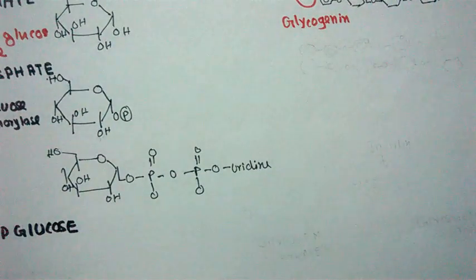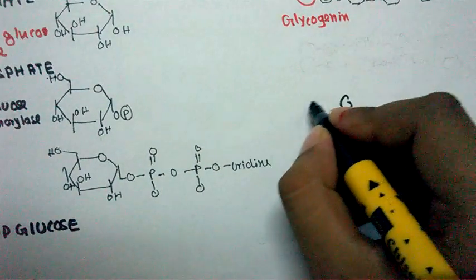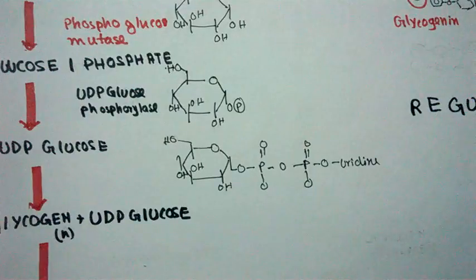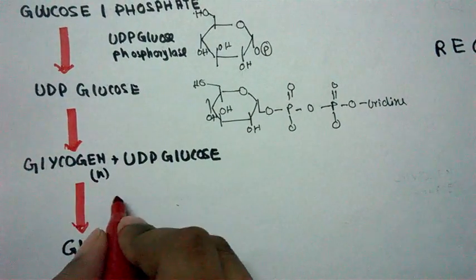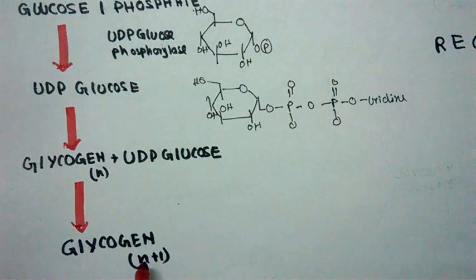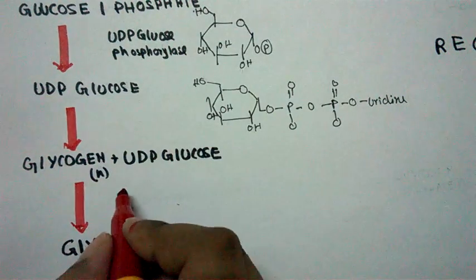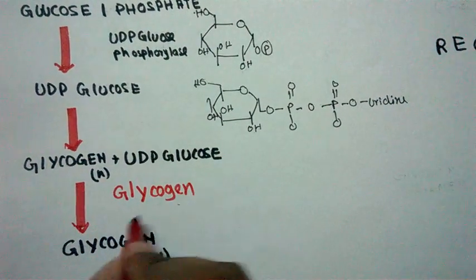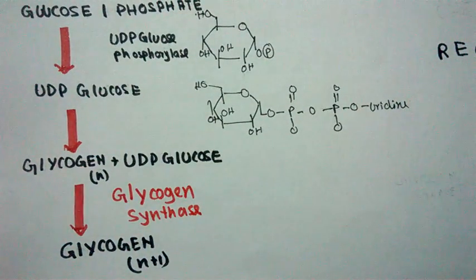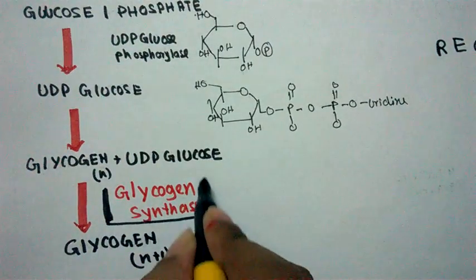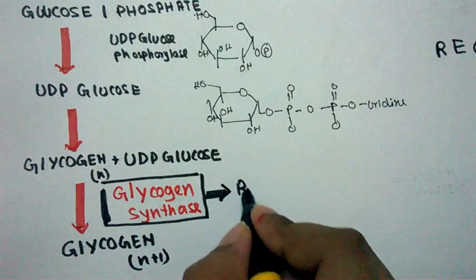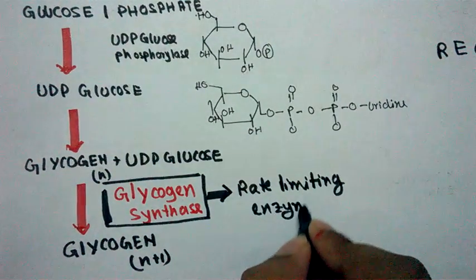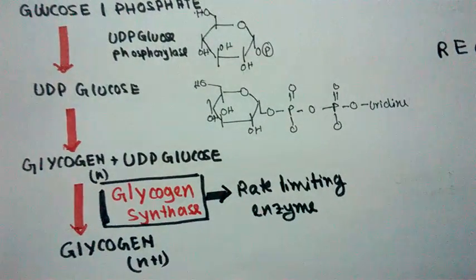Next we would talk about regulation. One important enzyme to remember is in the step where glycogen plus UDP-glucose forms glycogen (n+1 residue). This step is catalyzed by a very important rate-limiting enzyme called glycogen synthase. This is the rate-limiting enzyme in the glycogenesis pathway, and it can get allosteric modification.